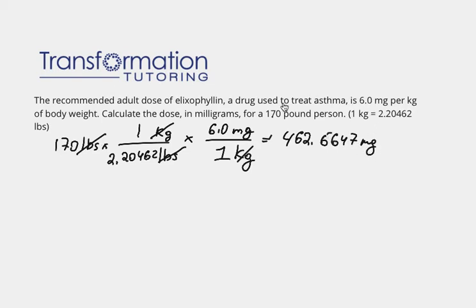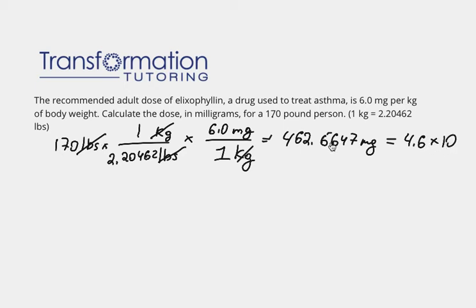Now if I apply significant figures: there are 2 significant figures in the number 6.0, which is the least number of significant figures. So I round the answer to 2 significant figures, giving 4.6 times 10 to the 2nd milligrams. That would be my final answer.